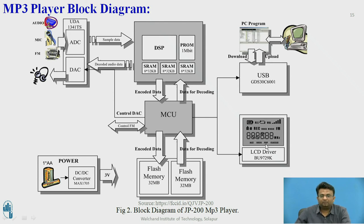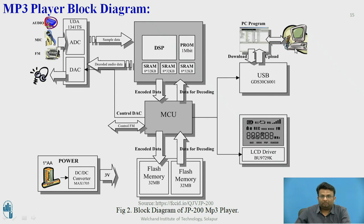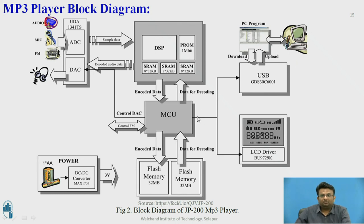The LCD display is used to show the current song being played, FM radio status, and other information. A USB connector is also present, used to upload data from the MP3 player to a computer, or to copy data from the computer to the MP3 player via the microcontroller unit.